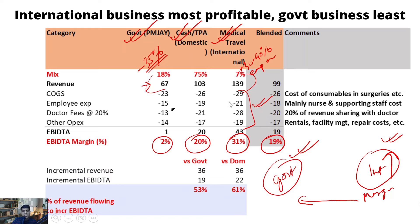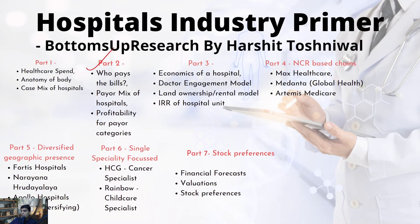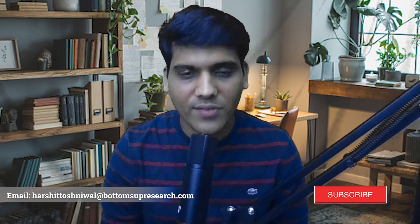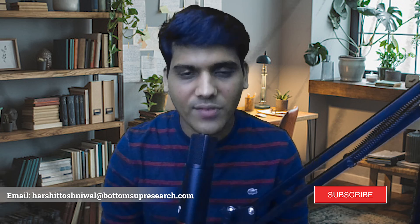We will discuss unit economics and various costs in Part 3. This is where we end Part 2. In Part 3, we will cover the economics of hospitals, the doctor engagement model, whether you own or rent land, the IRR of a hospital over a 20-year period, and then the various hospital chains followed by stock preferences. I've also done a similar deep-dive on the cement industry — the link is in the description below. Thanks a lot for watching, stay tuned, and have a great day.